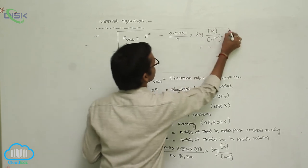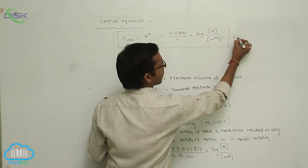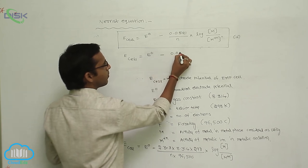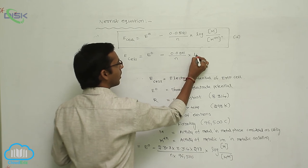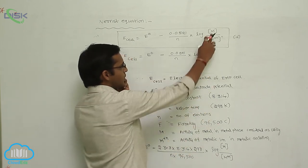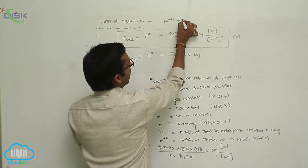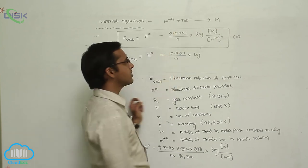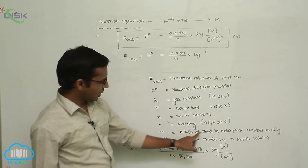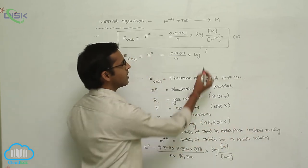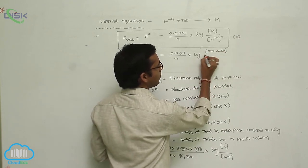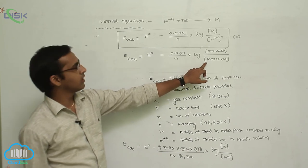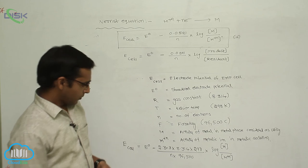Another way to write the Nernst equation: E cell equals E naught minus (0.0591 / N) into log [M⁺ᴺ] / [M]. Here M⁺ᴺ absorbs N electrons and is converted to M. The activity of the metal in the metal phase is considered as unity. So the log term becomes the concentration of product divided by concentration of reactant. This ratio of product to reactant concentration is the Q term in the Nernst equation.